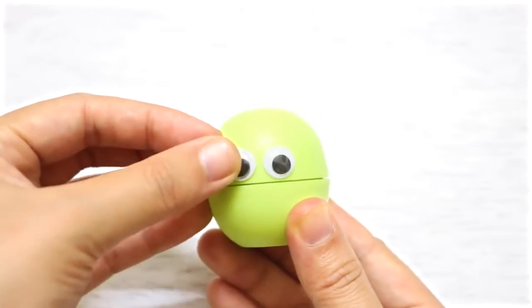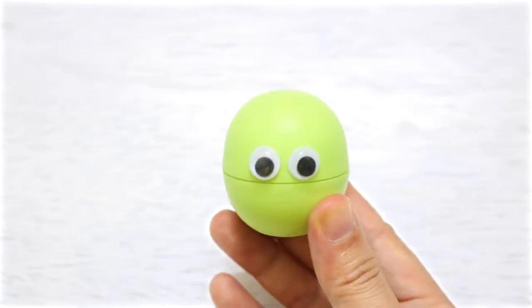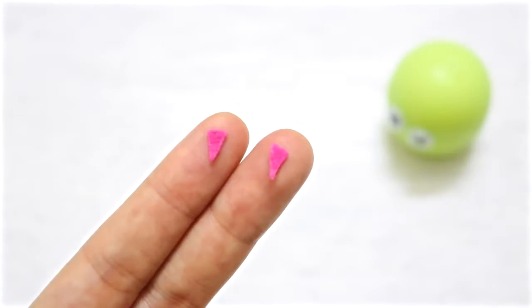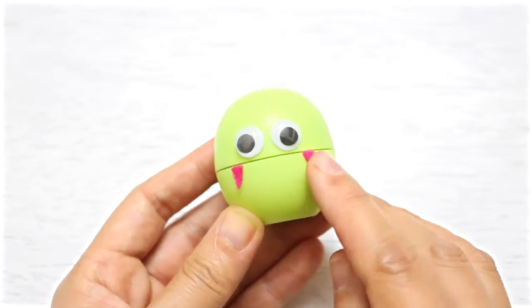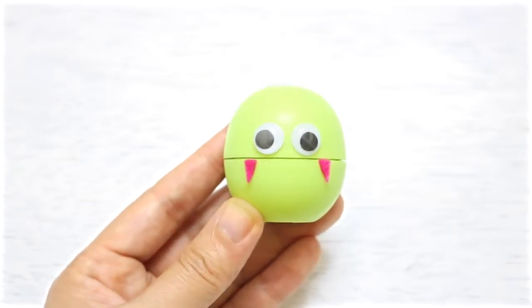First, glue two googly eyes on the top part of your EOS. Next, cut out two tiny triangles and glue them on the bottom part of the EOS like so to make the teeth.